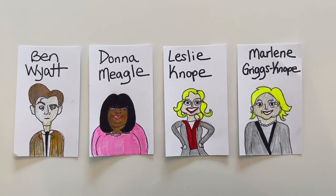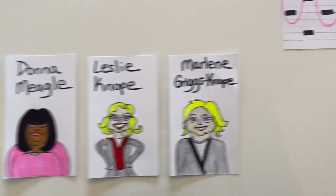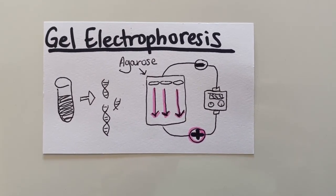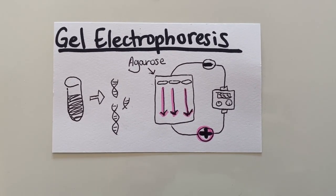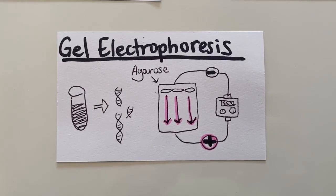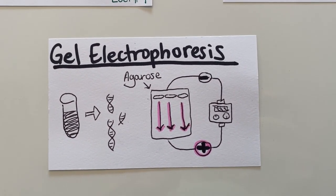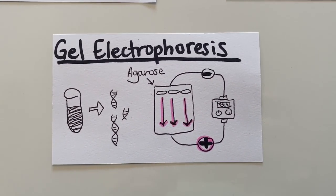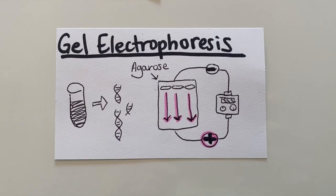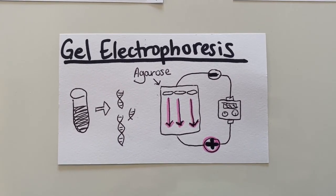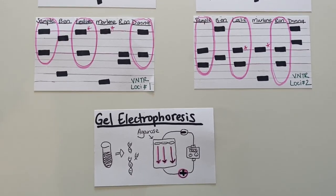Police took a sample of DNA from each of the suspects as well as the victim and performed a gel electrophoresis. The first step was to isolate and amplify the DNA fragments. These DNA fragments were then placed into a well on an agarose gel, which is attached to an electrical current with a positive end and a negative end. Since DNA is negatively charged, the DNA migrates towards the positive end, with shorter fragments moving faster than longer fragments. This produces DNA banding that can be seen as provided.